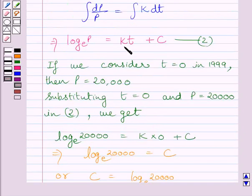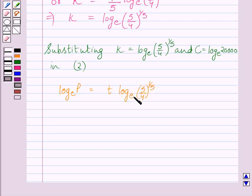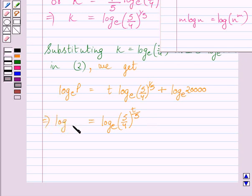Now we will substitute the corresponding values of K and C in equation 2. Equation 2 becomes: log P to the base E is equal to t multiplied by log of (5/4) raised to the power 1/5 to the base E, plus log 20,000 to the base E. Applying the law of logarithms, this term becomes log of (5/4) raised to the power t/5 to the base E. So we can write: log P to the base E is equal to log of (5/4)^(t/5) to the base E plus log 20,000 to the base E.